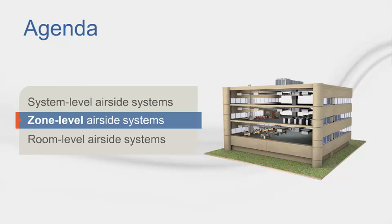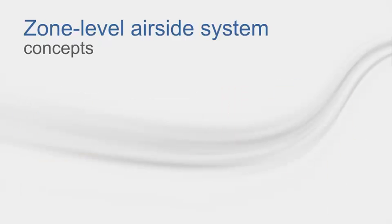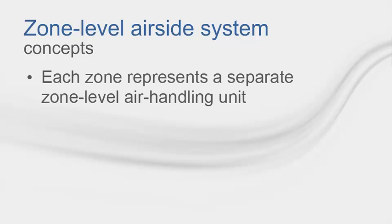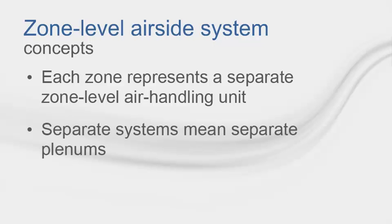That wraps up system level airside systems, so we will proceed with zone level airside systems. Just like with system level airside systems, zone level airside systems also have basic concepts that govern how you zone your rooms and zones. For zone level airside systems, each zone represents a separate RTU, and separate systems means separate plenums. We'll run through a couple of scenarios so you can see what TRACE is doing compared to the real world.